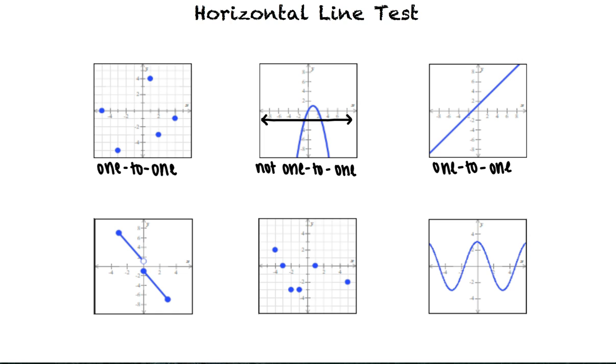Now why don't you try the last three? We can't draw a horizontal line that passes through more than one point on this first graph. So this means the function passes the horizontal line test and is 1 to 1.